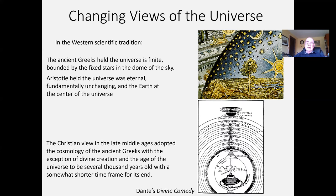Moving to the Christian view of the late Middle Ages, they adopted for the most part the cosmology of the ancient Greeks, with the very important change of divine creation from the Genesis story. The age of the universe therefore had to be bounded — somewhere in the order of four or five thousand years — and it was very much universally understood that the world would come to an end sooner than later, when God would bring his creation to its fruition.